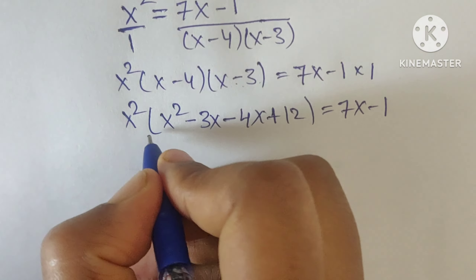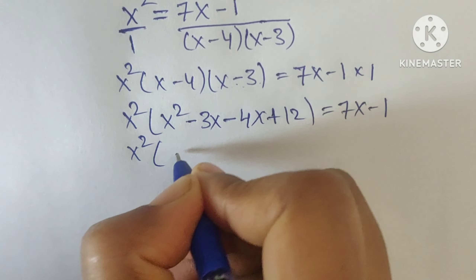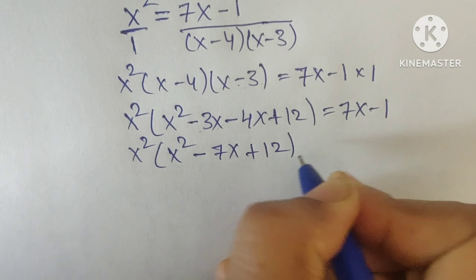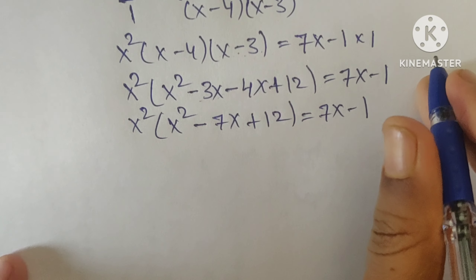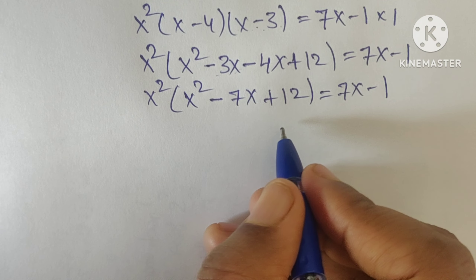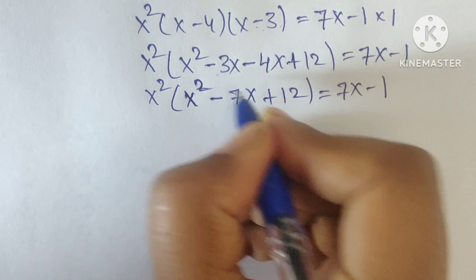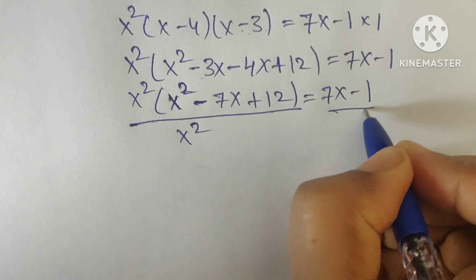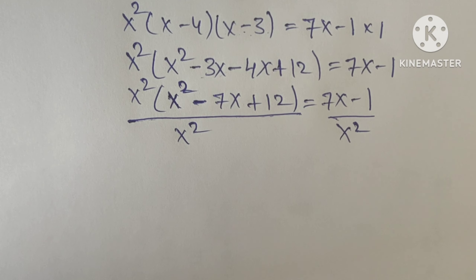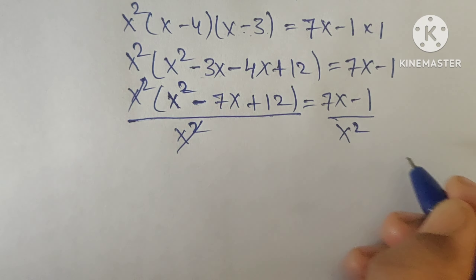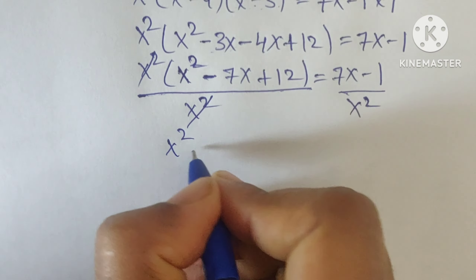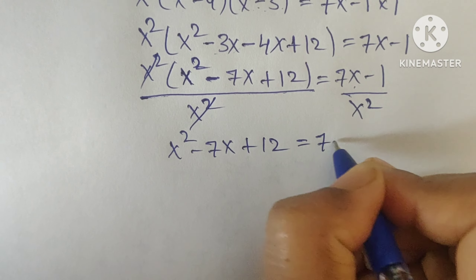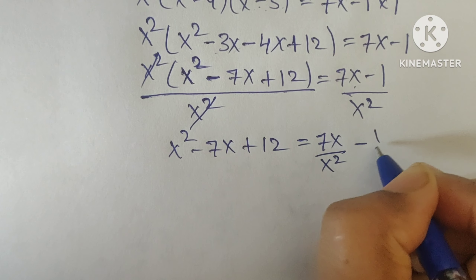So we have x squared times (x squared minus 3x minus 4x plus 12) equals 7x minus 1. Combining minus 3x and minus 4x gives minus 7x, so x squared times (x squared minus 7x plus 12) equals 7x minus 1. Now divide by x squared on both sides; x squared cancels, giving x squared minus 7x plus 12 equals (7x minus 1) divided by x squared.